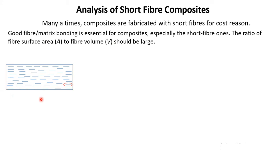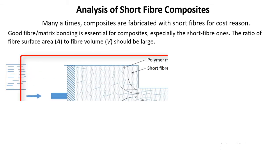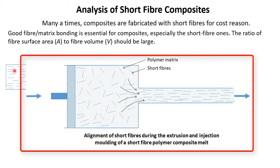Here we have a schematic of a short fiber composite. You can see these are short fibers — not completely long. In this schematic the fibers are shown fully aligned, but this is not always the case. A short fiber composite may have fibers oriented randomly in all directions. However, during manufacturing it is possible to align the short fibers in one direction. For example, during the molding process the mold can be designed so that polymer flow happens in one direction, and during the flow the fibers can get aligned.